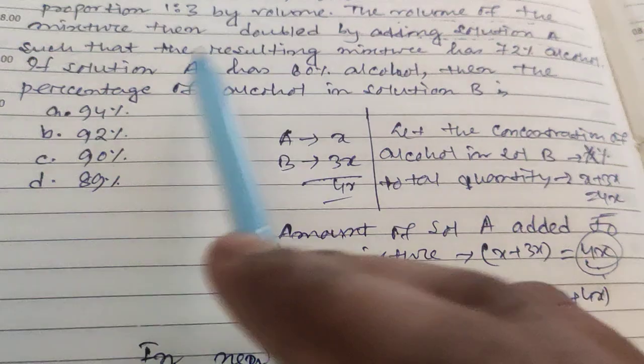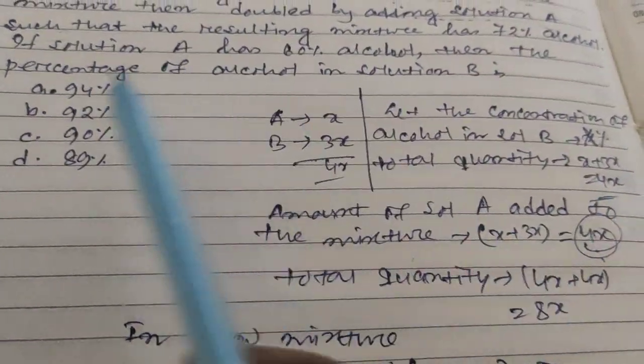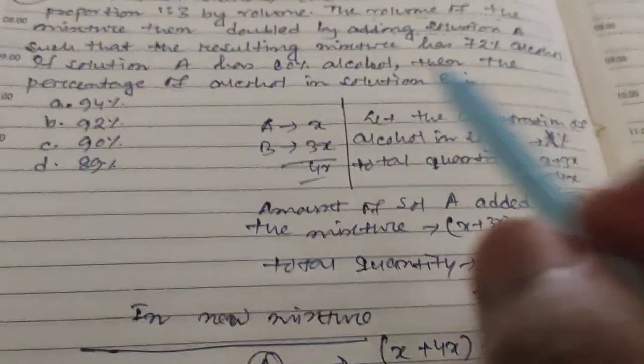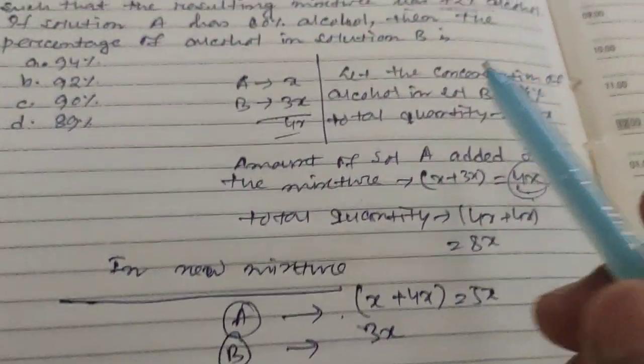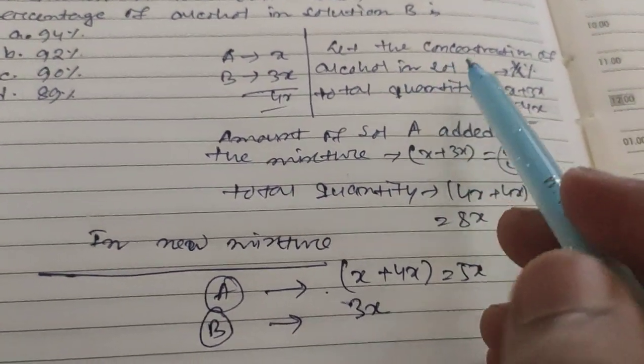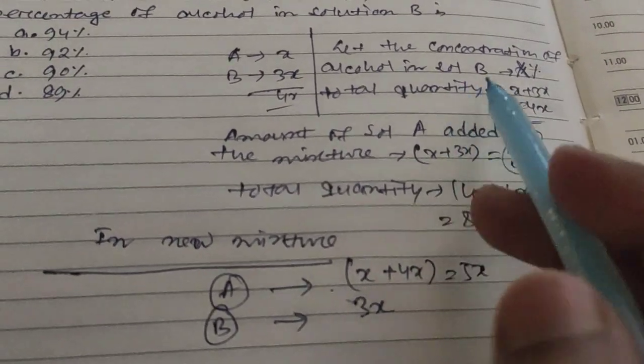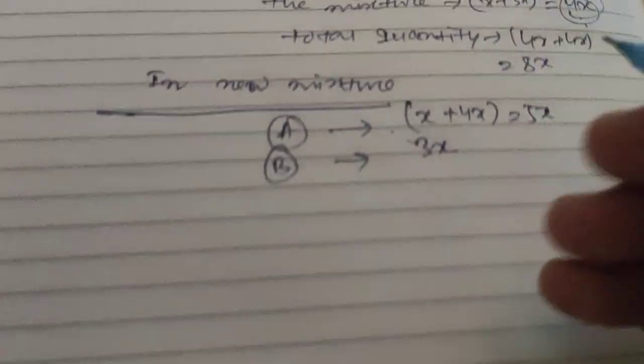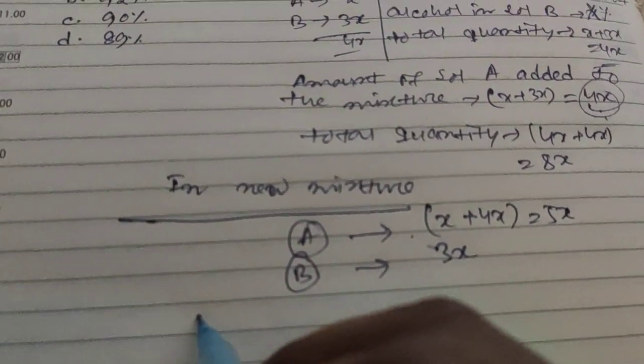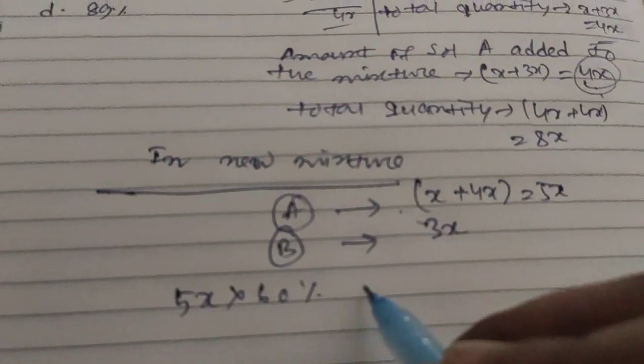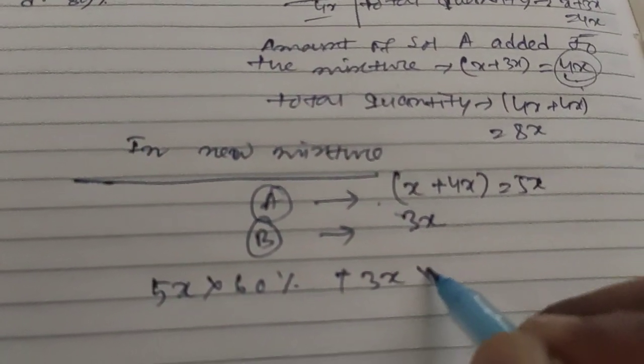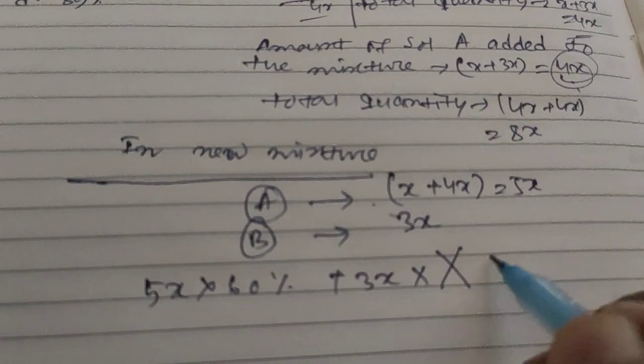It is given that solution A has 60% alcohol, and we need to calculate the percentage of alcohol in B. For the mixture now, total is 72% alcohol. We have assumed that the concentration for the alcohol in solution B is capital X percent.